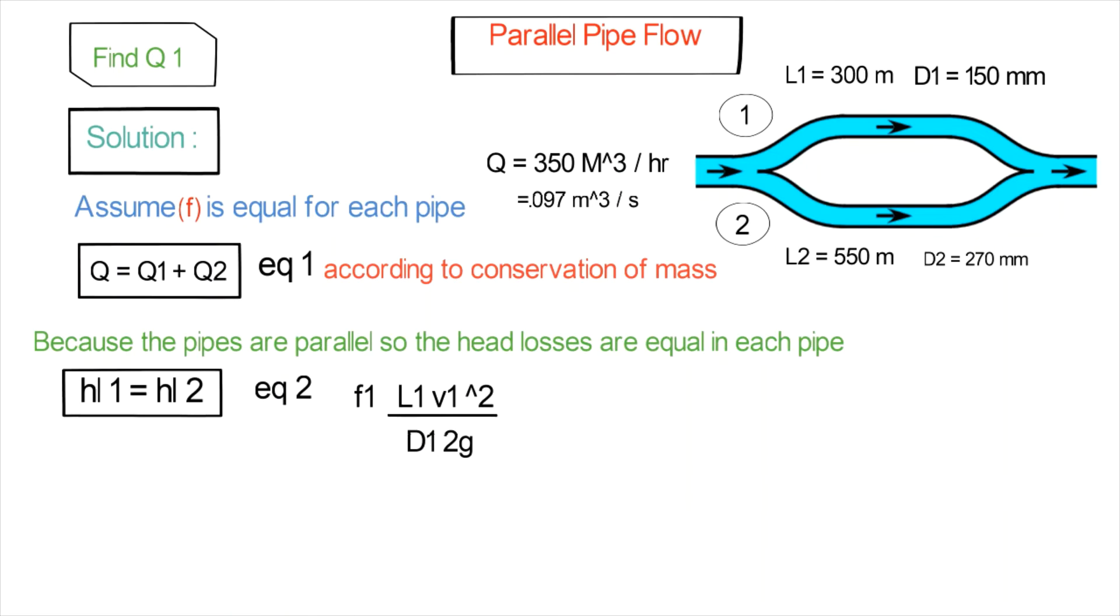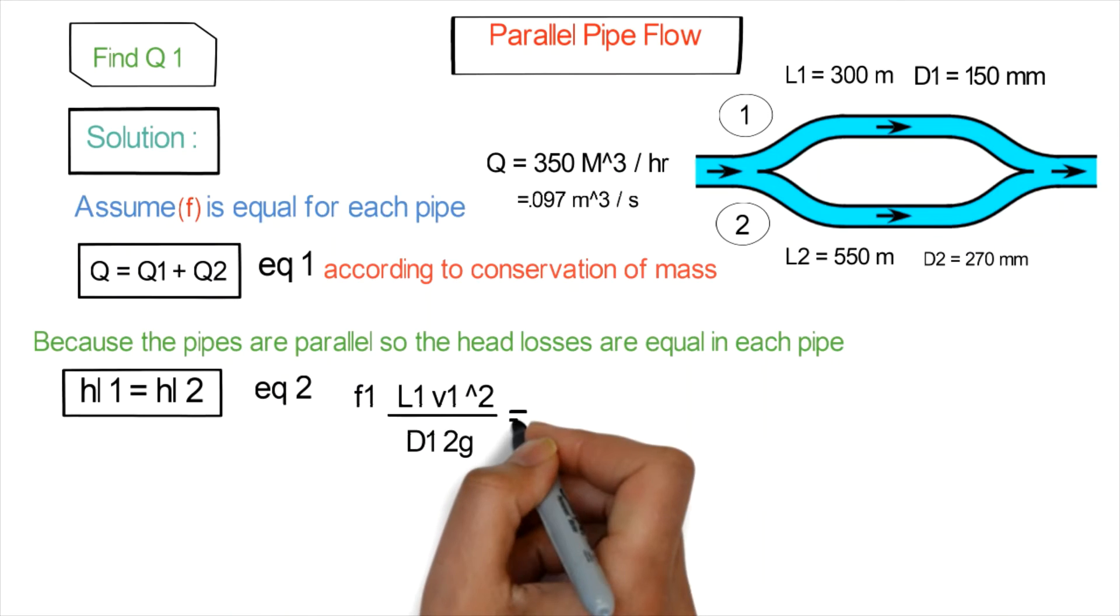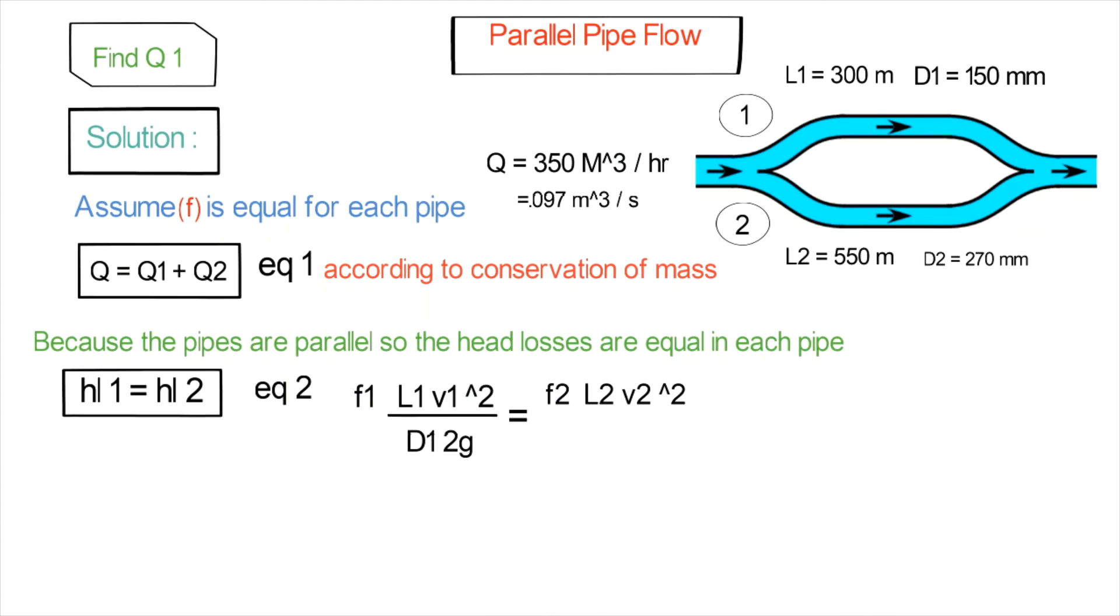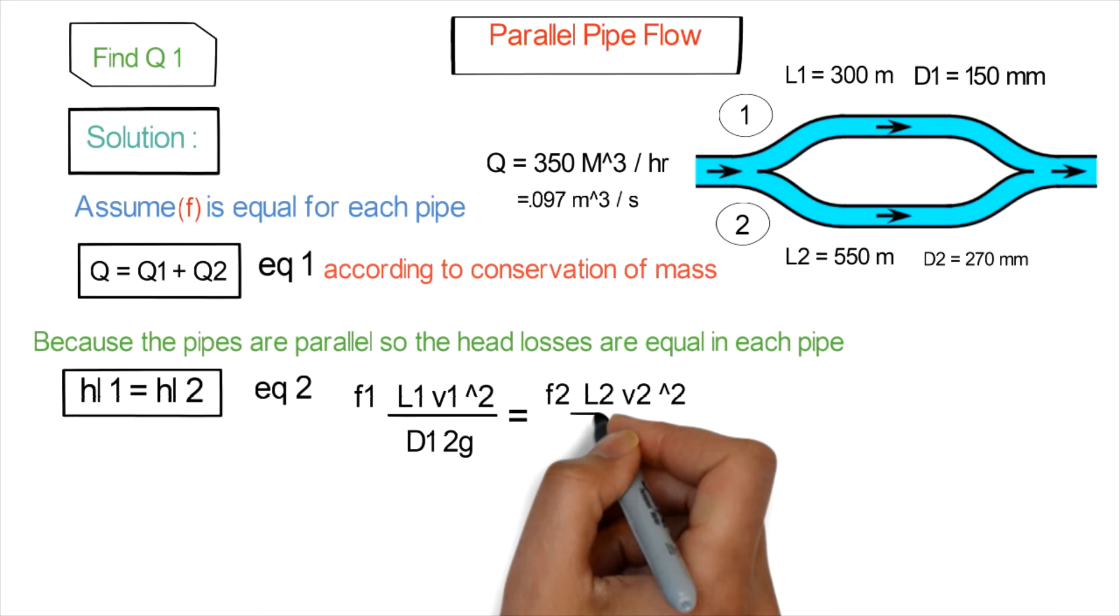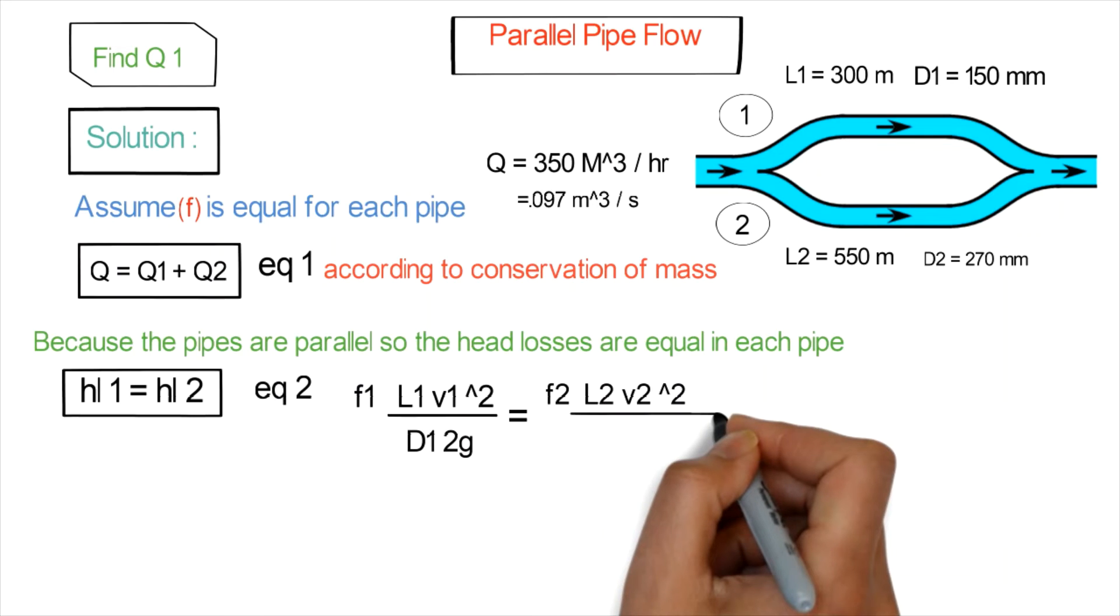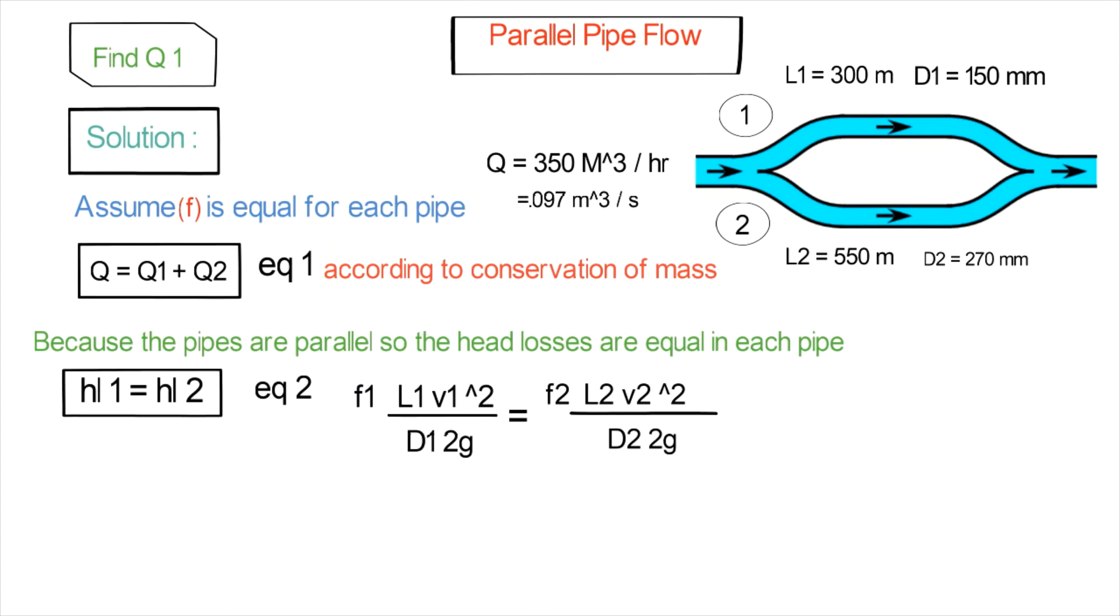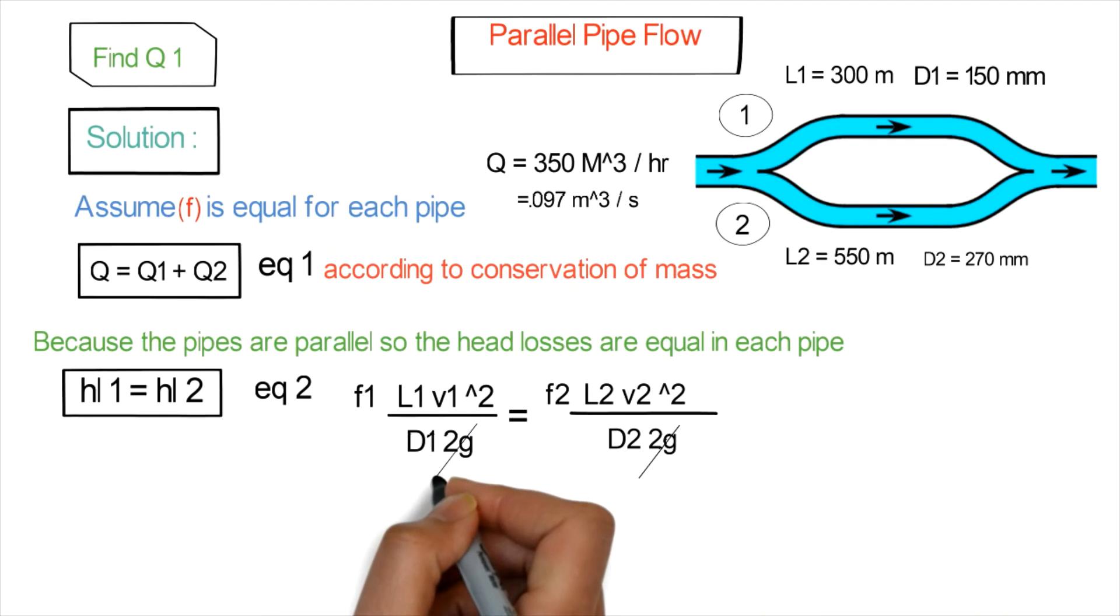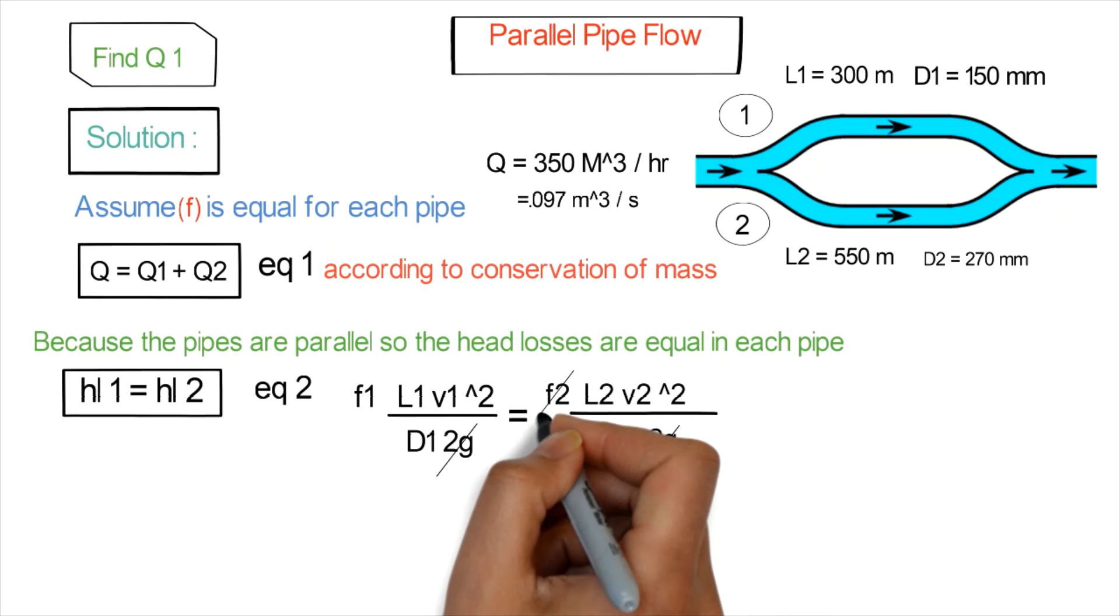We assume f1 equals f2, so the friction coefficient for pipe one equals the friction coefficient for pipe two. Therefore, f1 cancels f2 and 2g cancels 2g.